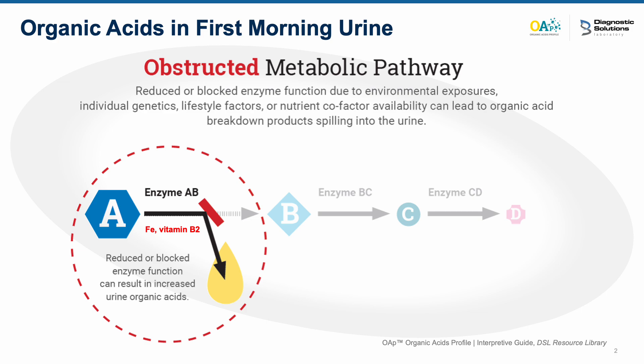When there are obstructions in the pathways, usually related to blocks in enzymes or missing vitamins and cofactors, organic acid intermediates will spill over into urine, resulting in elevated levels on the test.